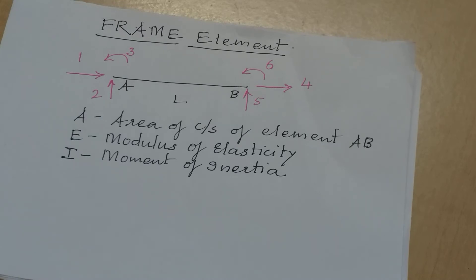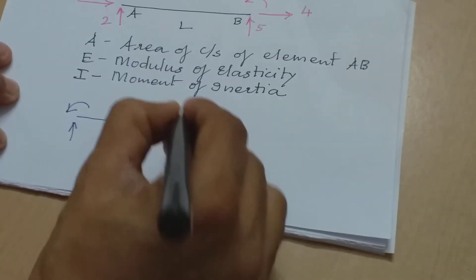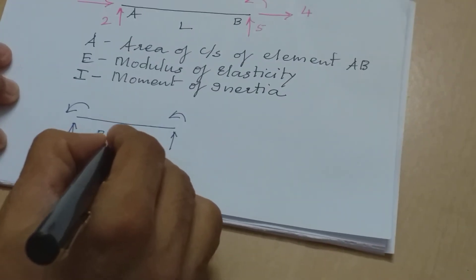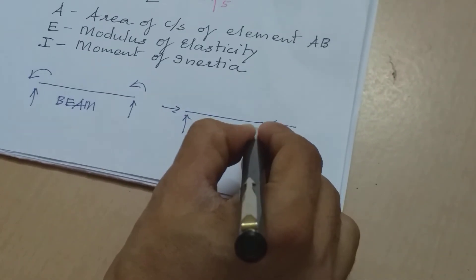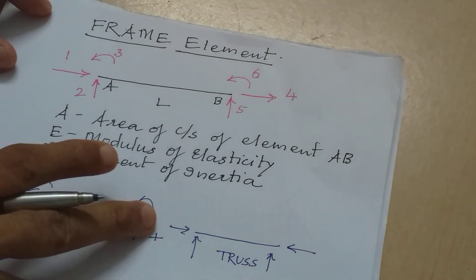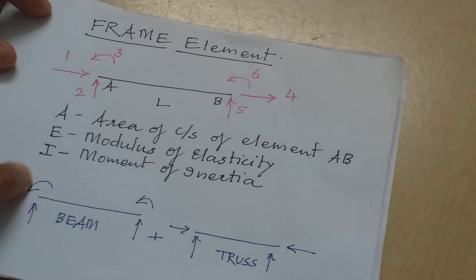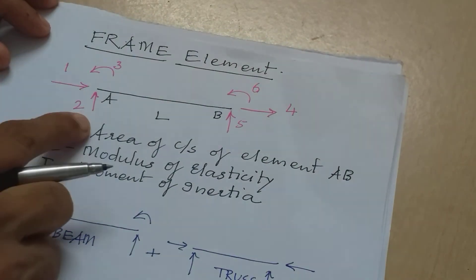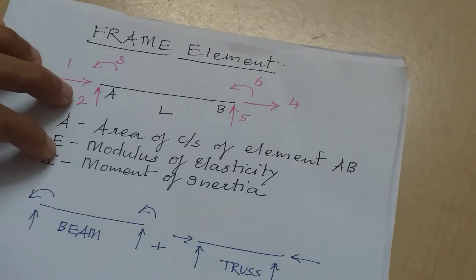If you remember our earlier two elements — the beam element and the truss element — the frame element is a combination of both. In the truss element, displacement in X and Y directions were possible at every joint. In the beam element, displacement in Y and rotation about Z axis were possible. In the frame element, displacement in X, displacement in Y, and rotation about Z axis are all possible. So the frame element is a combination of beam and truss elements.